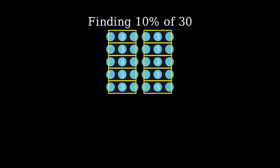Since we want 10% or 1 tenth, we only need one of these groups. This means 10% of 30 is 3. Let's see this mathematically.